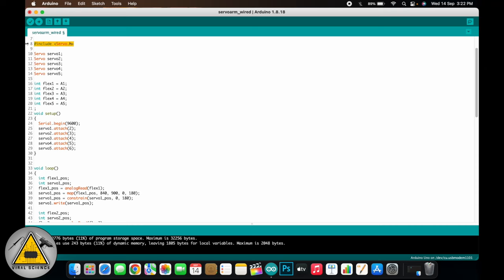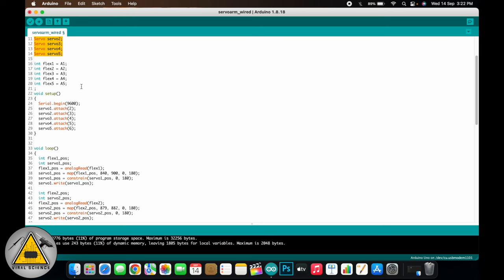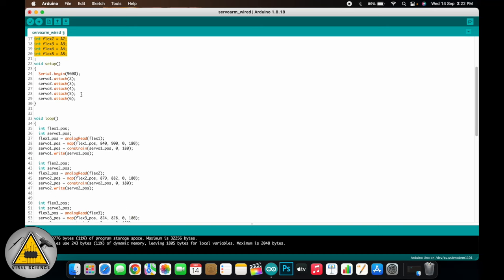Over here you can find we have included the servo library because we are using servo motors. Here we have declared the servo variables. And here we have declared the pin numbers for the flex sensors. So we are using analog pins for the flex sensors from A1 to A5. Here we have declared the pin numbers for the servo motors. So we are using digital pins D2 to D6 for servo motors.